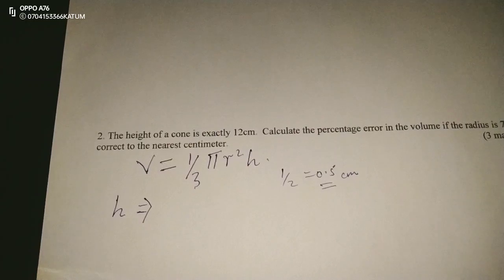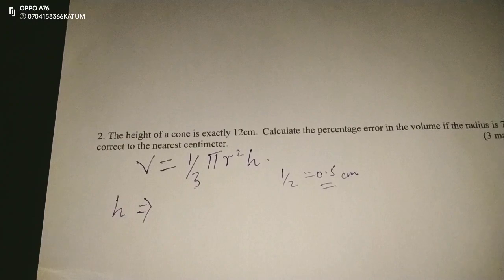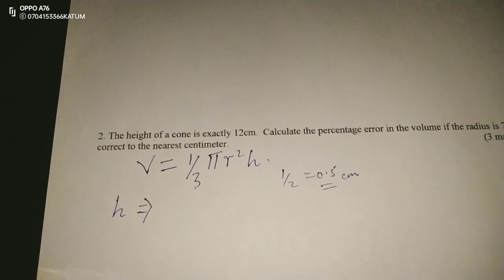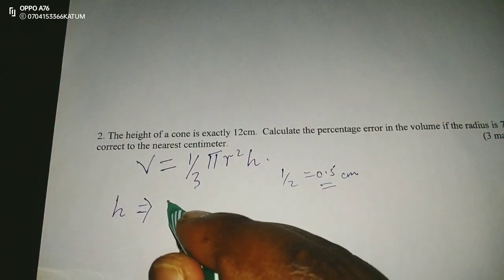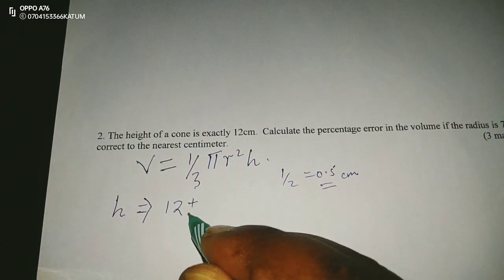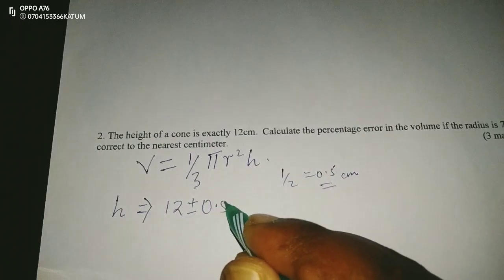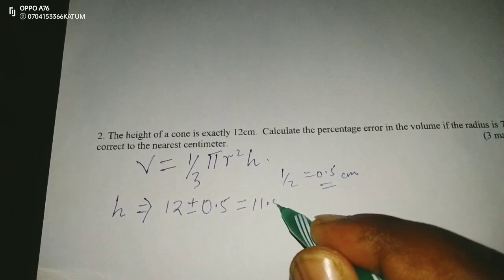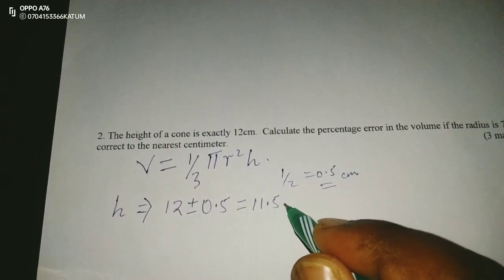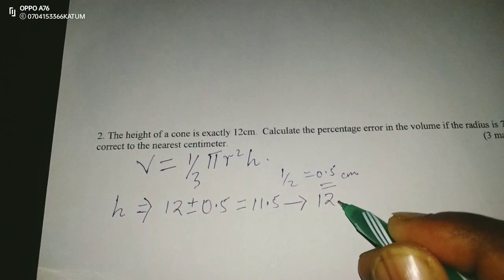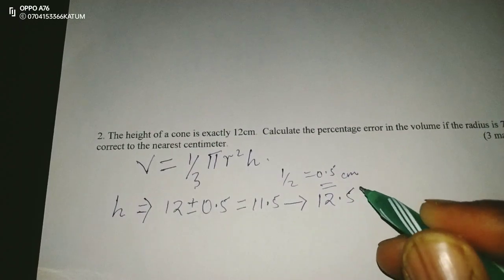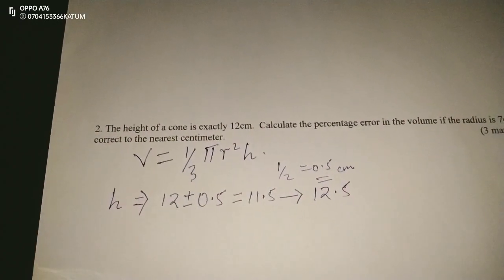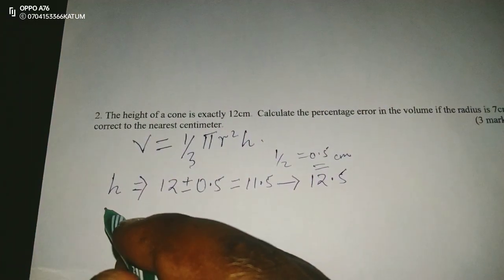In the recording of the height of this cone, to obtain the range we take 12 and add and subtract 0.5. This gives us a range of either 11.5 all the way to 12.5 centimeters. That is the range of the height of this particular cone.